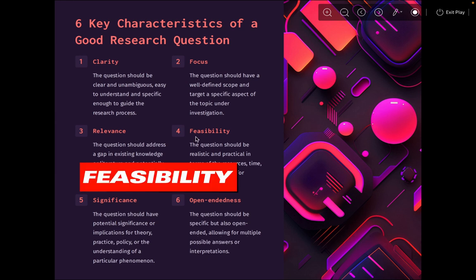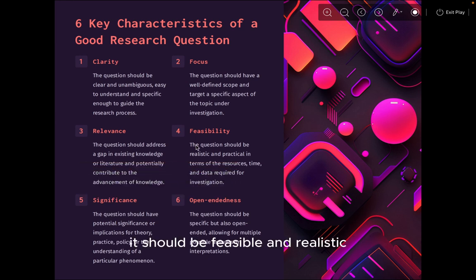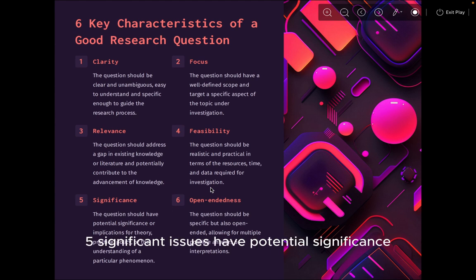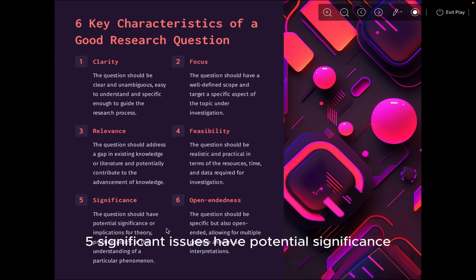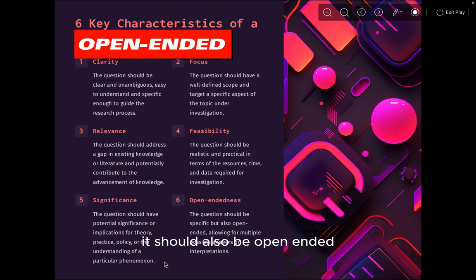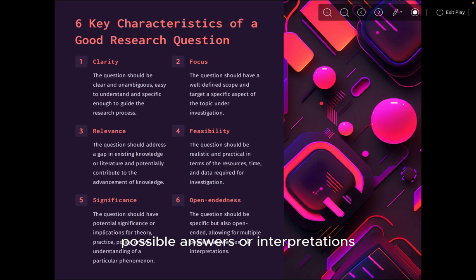Four, feasibility — it should be feasible, realistic, and practical in terms of the resources, time, and data required for investigation. Five, significance — it should have potential significance or implication for theory, practice, policy, or the understanding of a particular phenomenon. It should also be open-ended, allowing for multiple possible answers or interpretations.